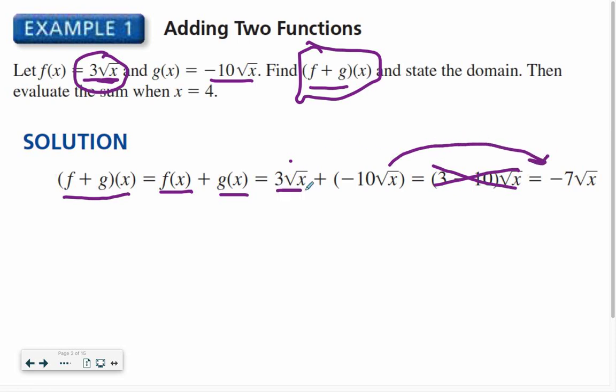So then I can see I have the same radicand, the square root of x, so I can combine these terms. So 3 plus negative 10 is negative 7. So I found what f plus g of x is.